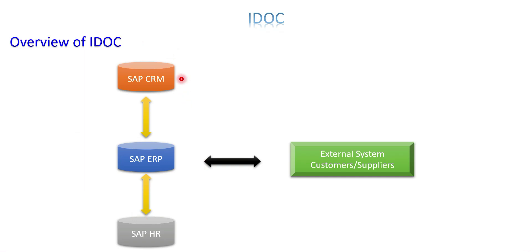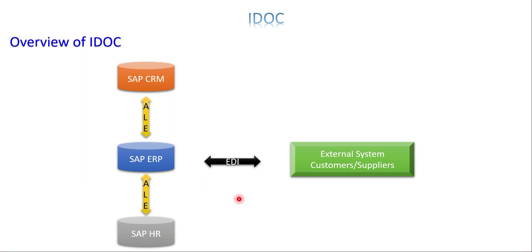In simple words, some systems are in the same network and others are in a different network. The methodologies we are going to use are ALE and EDI. Generally, when systems are within the same network — whether SAP or non-SAP — we prefer the ALE concept. If the data is exchanged through an IDOC, we prefer to go with ALE. If there is communication between an external system and our business system, we prefer EDI.